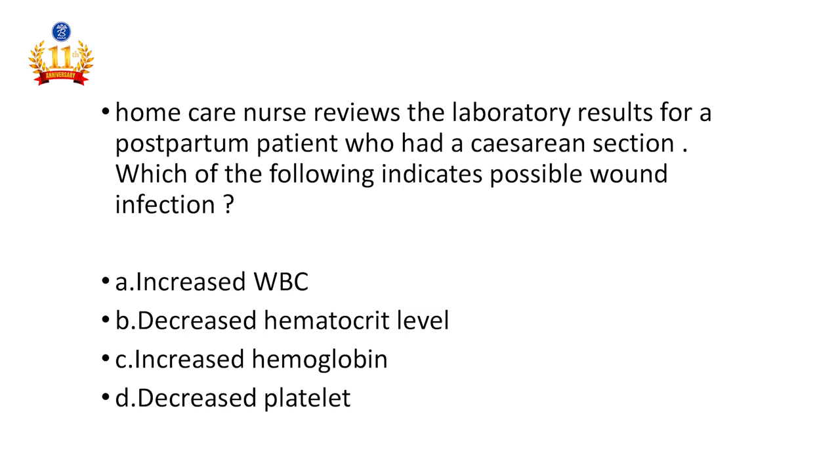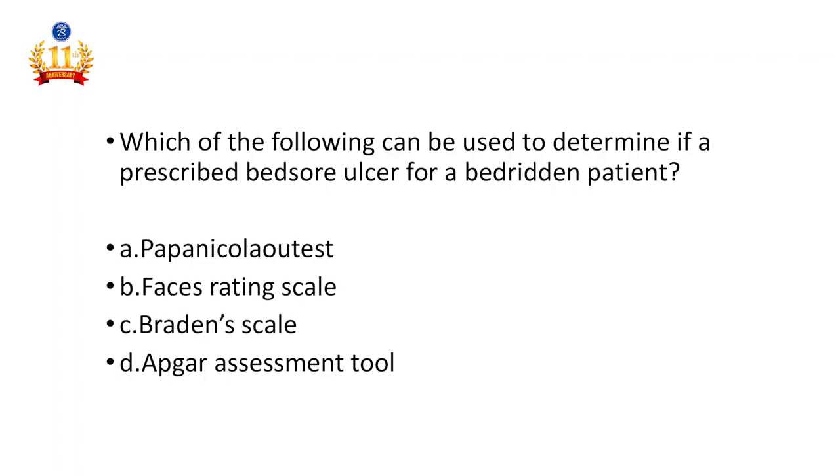Thirteenth question: A home care nurse reviews laboratory results for a postpartum patient who had a cesarean section. Which of the following indicates a possible wound infection? Increased WBC, decreased hematocrit, increased hemoglobin, or decreased platelets. The answer is increased WBC. Regarding postpartum sepsis: primary postpartum fever within 24 hours suggests dehydration; after 24 hours there are chances of sepsis. In any infection, the WBC will be elevated.